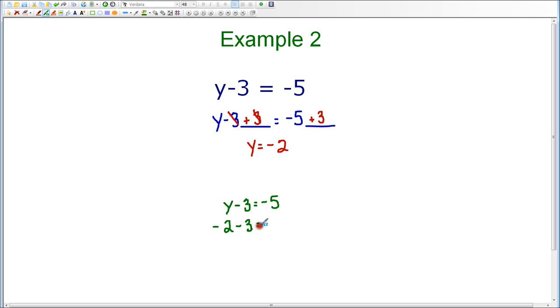So I have negative 2 minus 3 equals negative 5. Now I know that when I'm subtracting integers, I can add the opposite or use the keep-change-change rule.